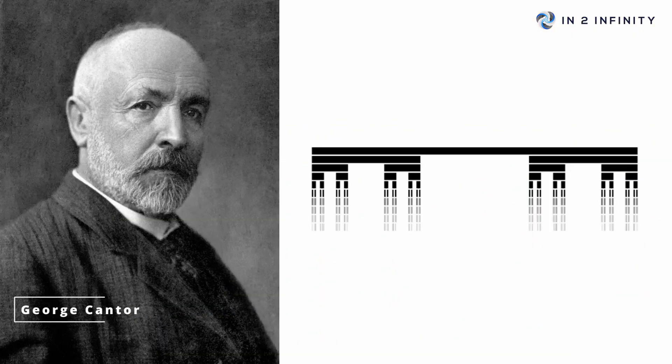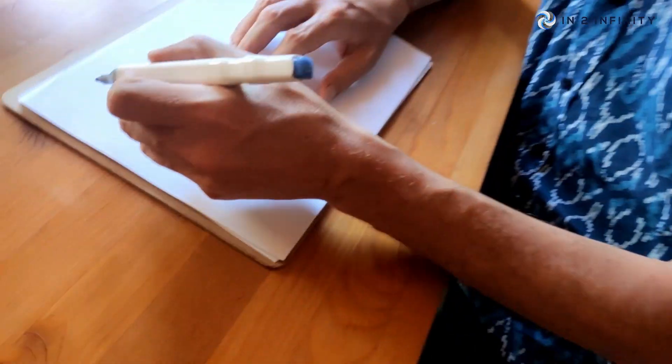Before we do, let's have a little think about the nature of infinity. It started to become quite a topic at the end of the 1900s when a guy called George Cantor described something called an infinite set and started to differentiate between different types of infinity.